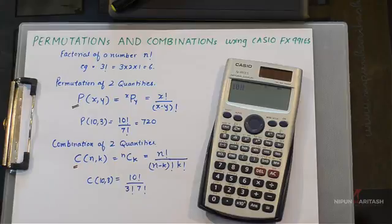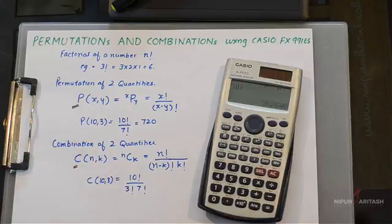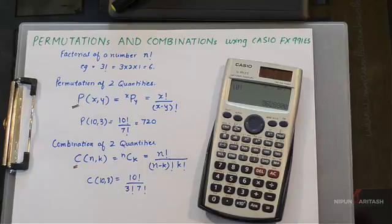and its alternate function is factorial. So when we press equal, it gives me factorial of 10 and then I can further divide it with,